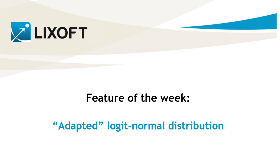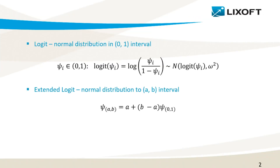To learn more about them, listen to the feature of the week number 31. Logit transformation is used for model elements that have theoretical or empirical upper and lower bounds, such as saturation, biomarker levels, or tumor size. By default, the logit normal distribution is bounded to a unit interval, but a simple formula extends it to any A-B interval.